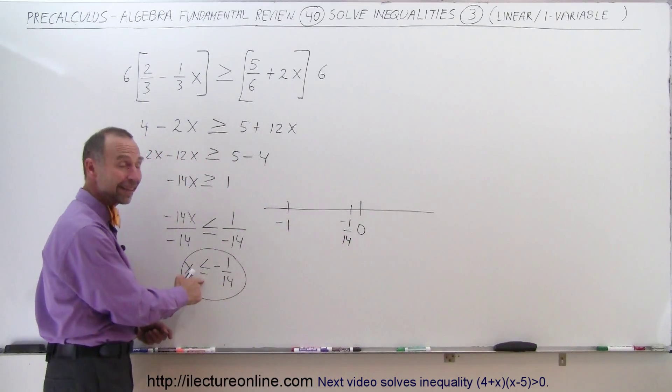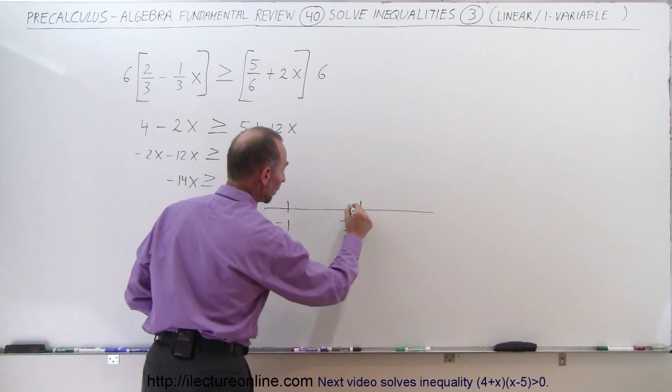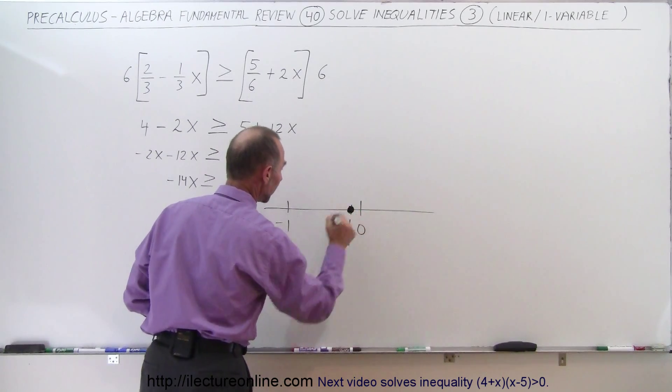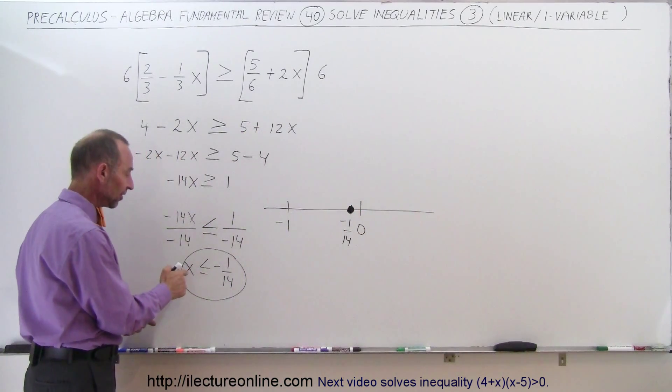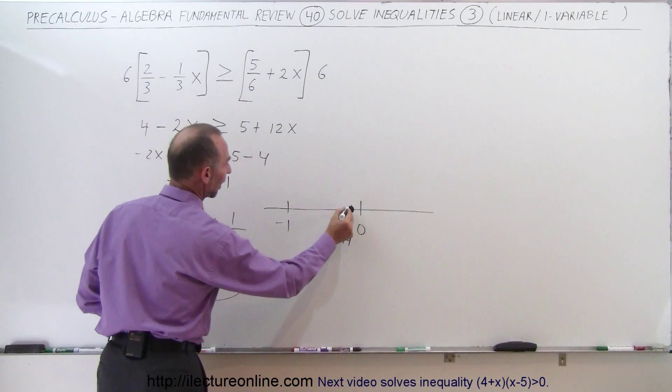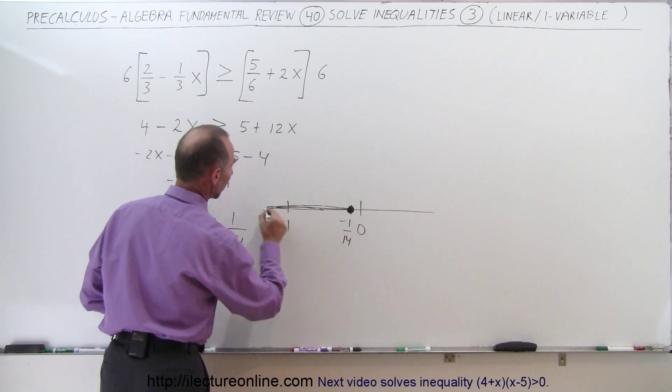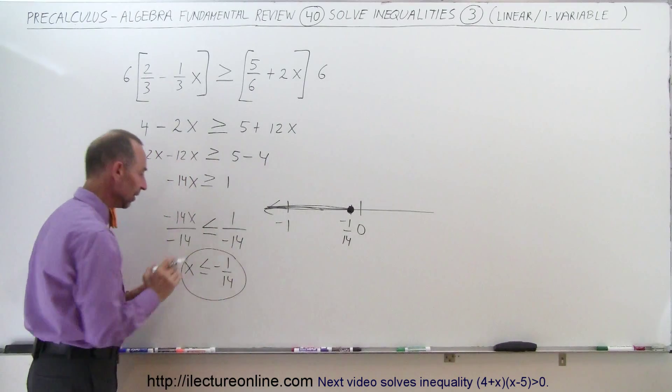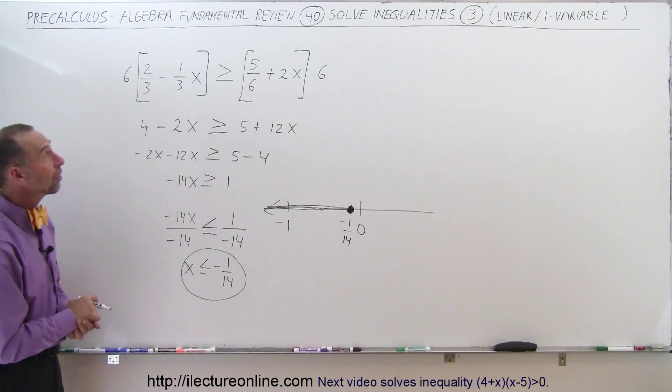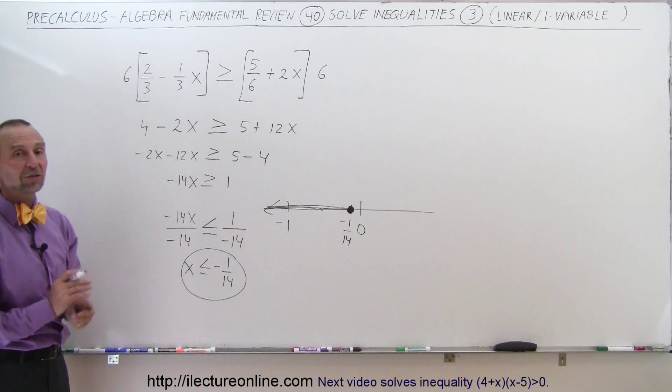Notice that it includes that endpoint, so let's make a solid circle right there, and then everything to the left because it's smaller than, so to the left of that number. And so this is how we graphically represent this. That's how we solve inequalities when there's fractions.